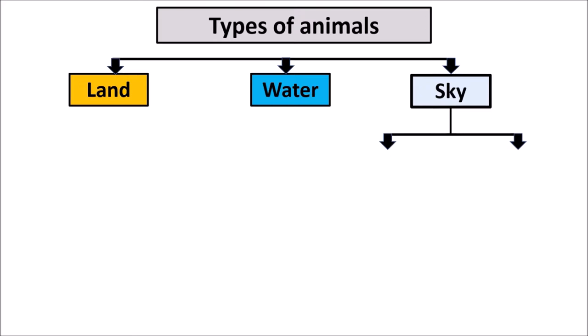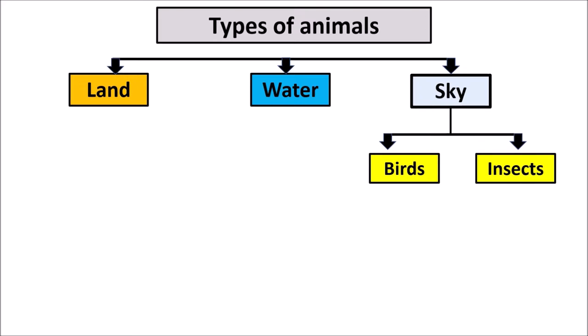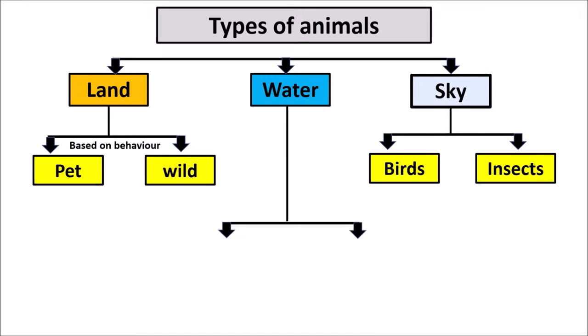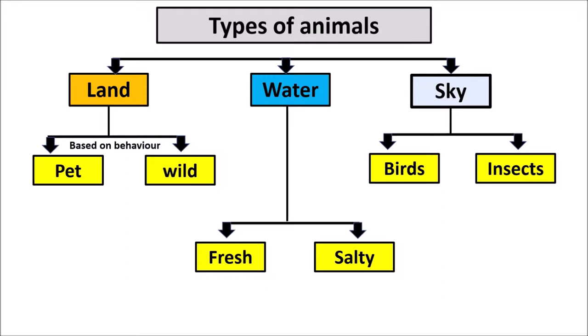Animals that can fly are the birds and the insects. Based on their behavior, the land animals can be categorized as pet and wild animals. Water animals are of two types: freshwater animals and salty water animals.